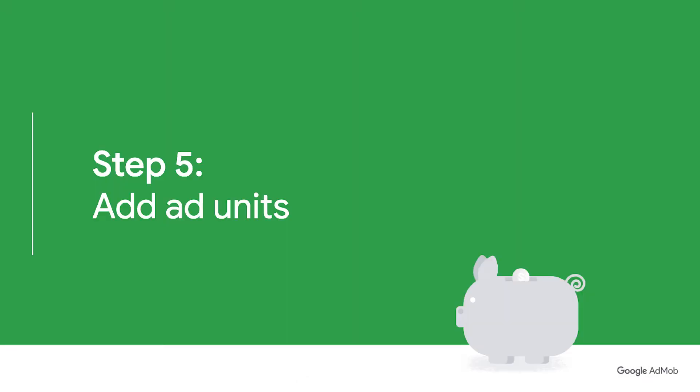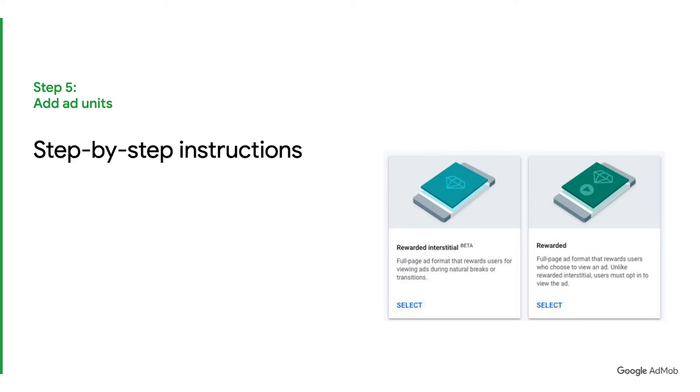Step 5: Add Ad Units. Requirements met? Great! Now you have to add rewarded interstitial ad units in AdMob frontend. Remember, rewarded interstitials is an ad format on its own, so it should not be using rewarded or interstitial ad units. The process is similar to setting up other ad formats.